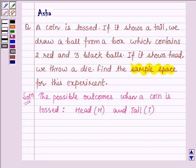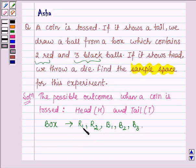Also, we are given a box. In this box, there are two red and three black balls. So, let us denote the two red balls by R1 and R2 and the three black balls by B1, B2 and B3. So, if a ball is drawn, then the possible outcomes are R1, R2, B1, B2 and B3.